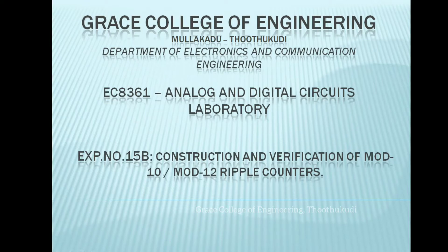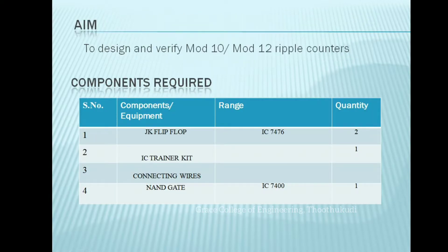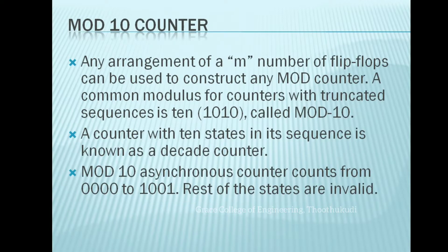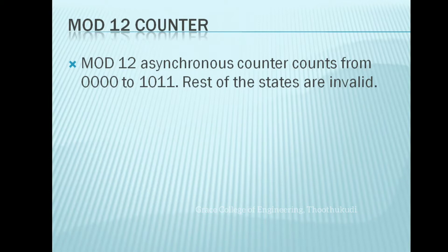This video covers the construction and verification of mod 10 and mod 12 ripple counters using IC 7476, a JK flip-flop, NAND gate IC 7400, and an IC trainer kit. An arrangement of flip-flops can be used to construct any mod counter. The common modulus for counters with truncated sequences is 10, called mod 10 or decade counter, which counts from 0000 to 1001; the rest of the states are invalid.